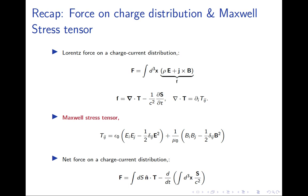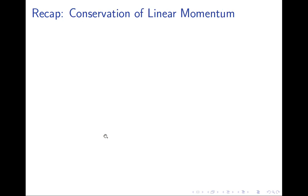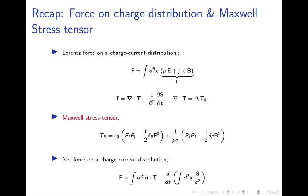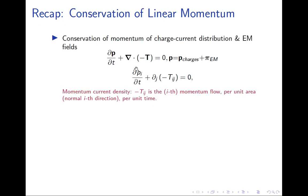The stress tensor expresses the force experienced by one part of a charge distribution due to the rest. The diagonal components give the normal force per unit area — the pressure. The off-diagonal components, such as T_12, T_23, give the force experienced in the i-th direction per unit area whose normal is in another direction — these are tangential forces, or shear stresses.